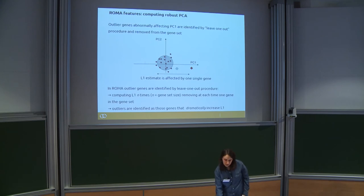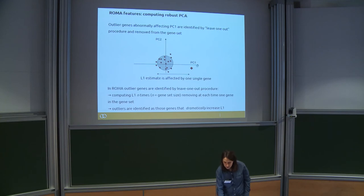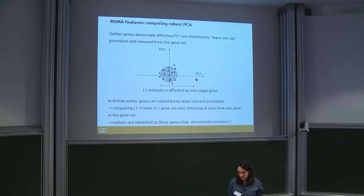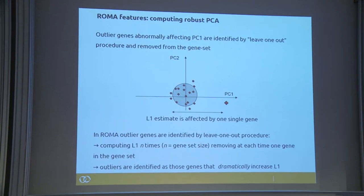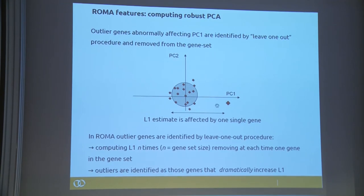Another consideration is that sometimes the first principal component is affected by outliers — very specific genes in the set that behave in a highly unusual way. In some cases this is an important pathway marker, but in many cases it is measurement noise. We should avoid having results that rely too much on these outlier-driven results.